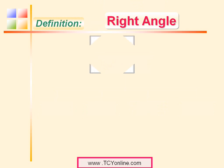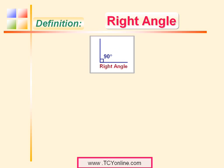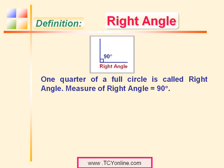Let's first look at the definition of right angle. In this figure we can see that these two lines are perpendicular to each other, or standing on each other, making an angle of 90 degrees, which is called a right angle. One quarter of a full circle is called a right angle. Since a full circle has 360 degrees, one quarter is 90 degrees. So a right angle has a measure equal to 90 degrees.